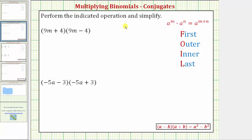We're asked to perform the indicated operation and simplify. Notice how we have the product of two binomials. These are often referred to as special products because the binomials are conjugates. Notice for the first product we have the quantity 9m plus 4 times the quantity 9m minus 4. Some textbooks do give a special formula when multiplying binomial conjugates shown here.